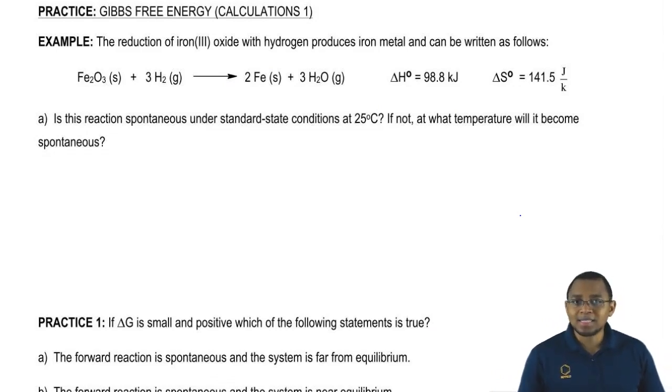We have 1 mole of iron 3 oxide solid reacting with 3 moles of hydrogen gas to give us 2 moles of iron solid plus 3 moles of water vapor. I give you the delta H or enthalpy value and the delta S entropy value. The question says, is this reaction spontaneous under standard state conditions at 25 degrees Celsius? If not, at what temperature will it become spontaneous?